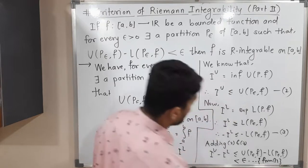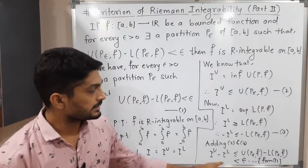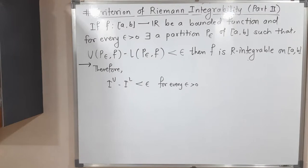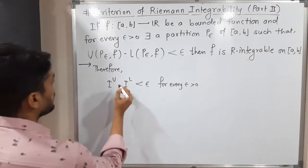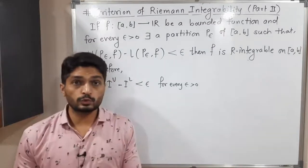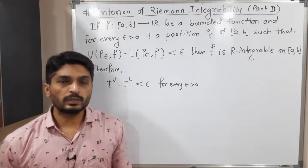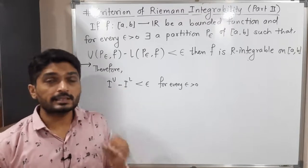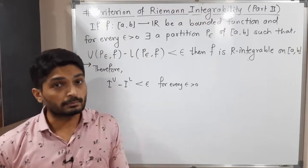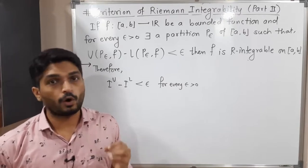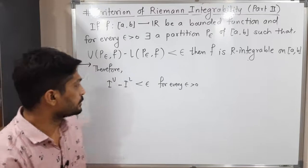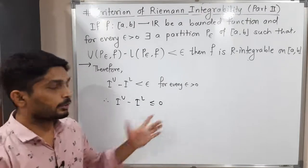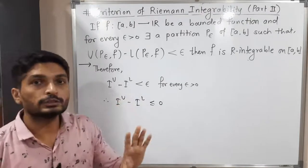So we get: upper integral minus lower integral, that is I_U minus I_L, is less than epsilon. And this is true for every epsilon greater than zero. Epsilon is a very small positive real number, and we are saying the left-hand side is less than every small positive real number. That means the left-hand side is either zero or negative — those are the only two possibilities. So therefore, I_U minus I_L is less than or equal to zero.